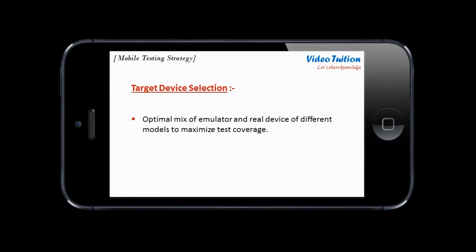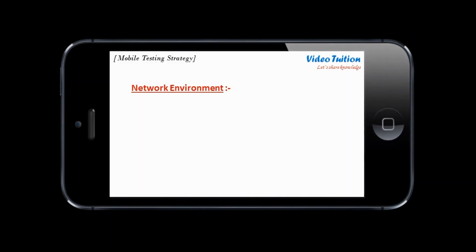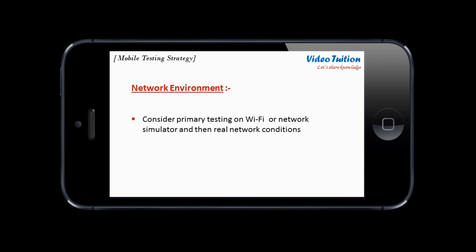Mobile devices and platform diversity is a key challenge in mobile application testing. The testing approach should include creating an optimal mix of emulators and real mobile devices of different models to maximize test coverage. Consider primary testing on Wi-Fi and using a network simulator. In addition, testing mobile applications in real network conditions is also essential to assess the behavior of the application.